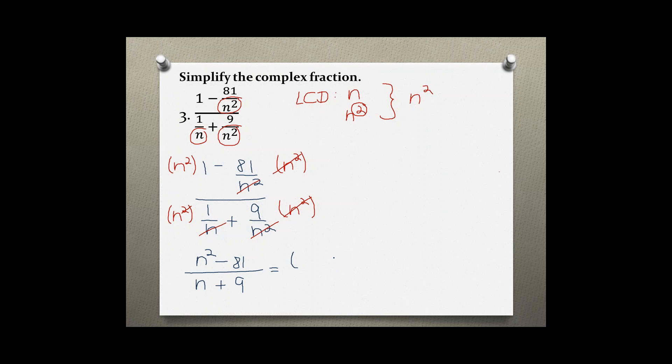So factoring by using the difference of two perfect squares, we have to square root the first term and then square root the 81 which gives me 9, and then I need a minus and a plus. And now I have n plus 9 in the bottom.